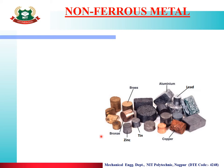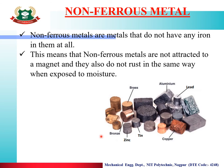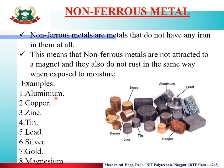Non-ferrous metals are metals that do not contain any iron. Non-ferrous metals are not attracted to a magnet. They also do not rust in the same way when exposed to moisture — corrosion does not happen when moisture comes in contact. Examples of non-ferrous metals include aluminium, copper, zinc, tin, lead, silver, gold, and magnesium.